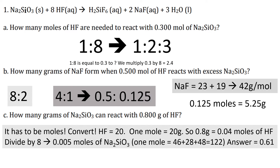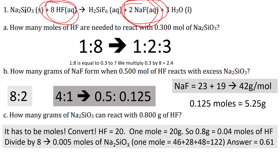For part (b), how many grams of sodium fluoride form when 0.5 moles of hydrogen fluoride react with excess sodium silicate? Focusing on the ratio between HF and sodium fluoride, it is 8 to 2, which simplifies to 4 to 1. The question gives 0.5 moles of HF.